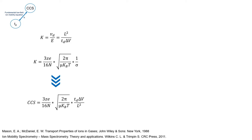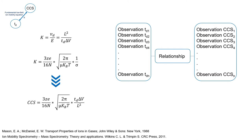The fundamental low-field ion mobility equation is the relationship between the collision cross-section sigma and the mobility constant. With a basic substitution and rearrangement, we can find the relationship between drift time and CCS. At first, the CCS seems quite easy to obtain from ion mobility measurements, although there are a few important considerations that need to be made. The problem is that, in contrast to drift time, the CCS of an ion is impossible to measure directly.